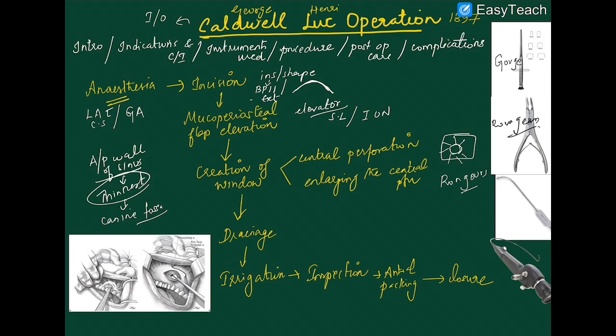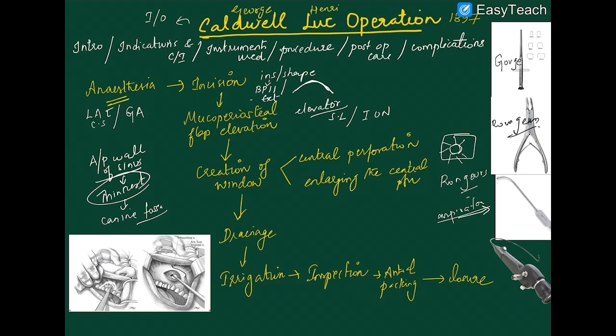After creating the window, proceed to drainage. The antrum is now visible, and you will be able to see antral tumors, mucus, cysts, or mycotic fungal balls. All pathological content must be drained using an aspirator. After aspiration, irrigate the antrum with normal saline. Repeat this process of draining and irrigating, and finally use an instrument called a nasopharyngoscope for inspection.